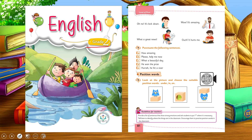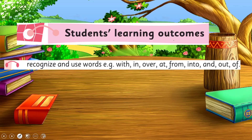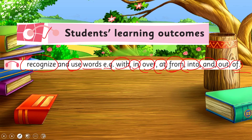Before this, in English for Grade 2, you have learned about position words. I hope you remember — if not, you may watch that video lecture again. On page number 21 of your book, we have also learned about prepositions before. Today we are going to learn further: to recognize and use words such as 'with,' 'in,' 'over,' 'at,' 'from,' 'into,' and 'out of.' This is our today's SLO.